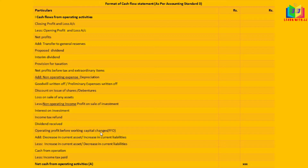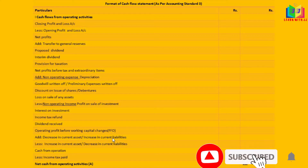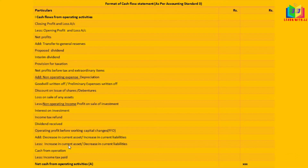To the operating profit before working capital changes, we add decrease in current assets and increase in current liabilities, and subtract increase in current assets and decrease in current liabilities. This adjustment brings us to the cash from operation.